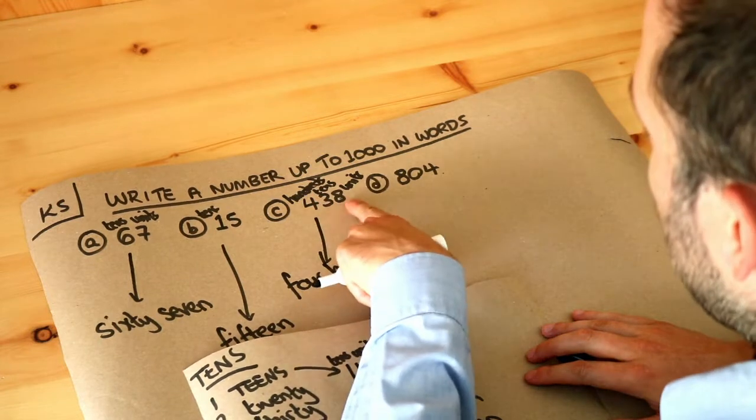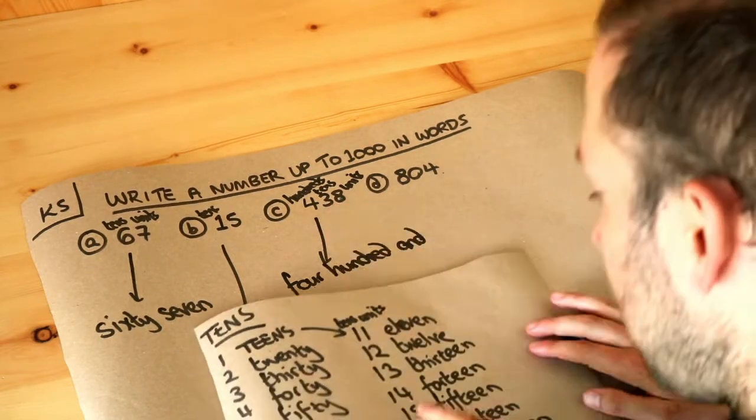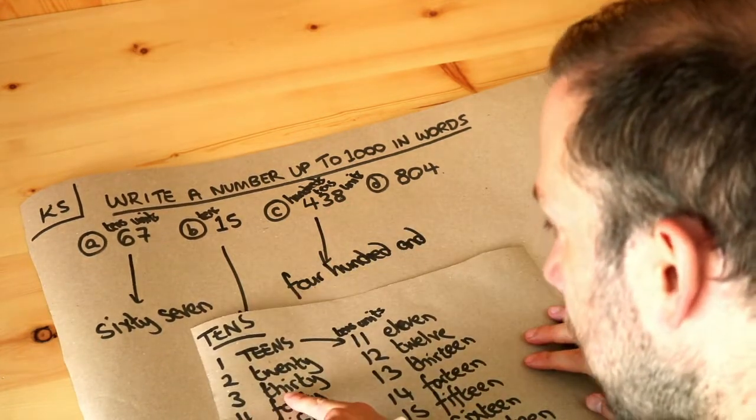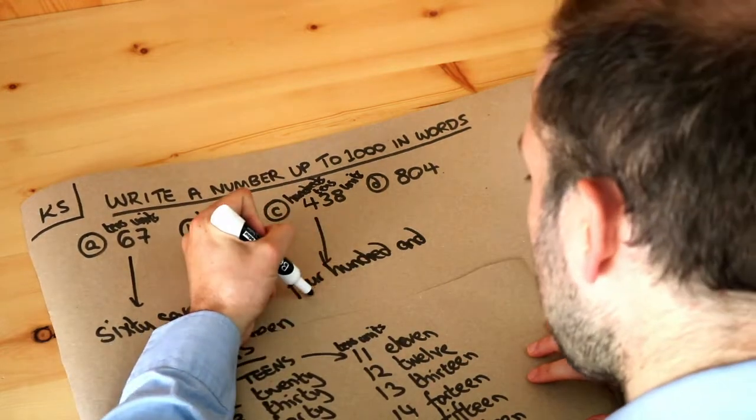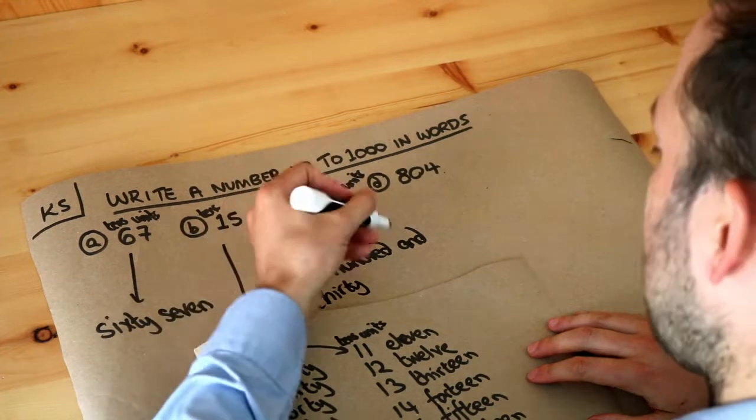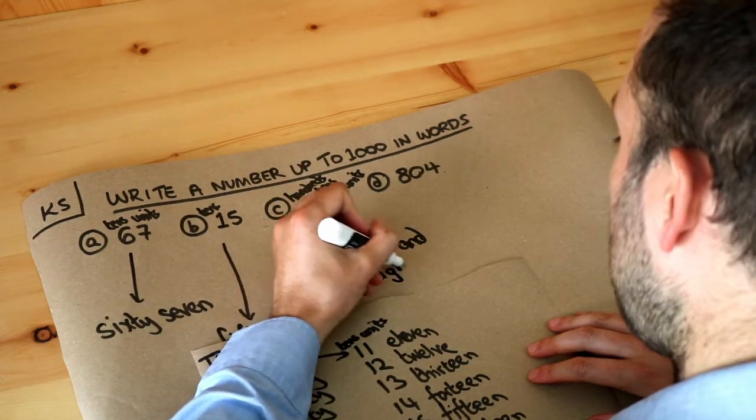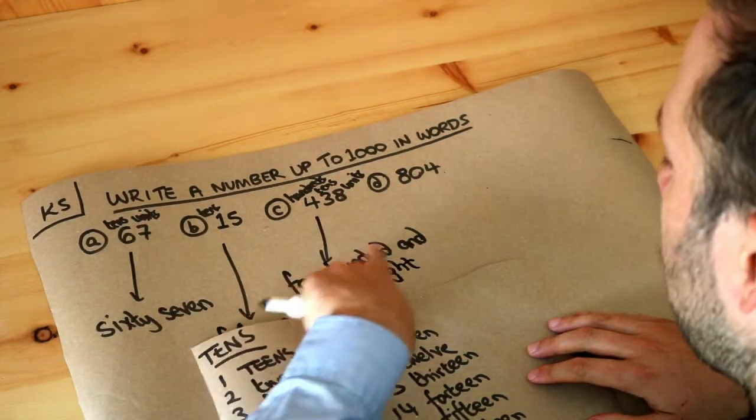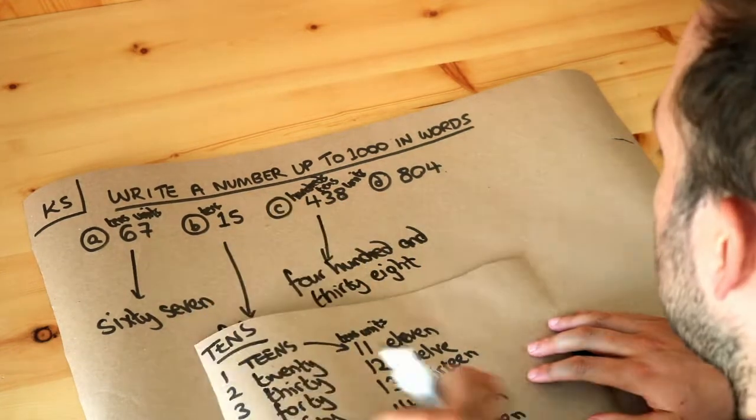And then we look at the rest of it. So we've got a tens digit of three. That's thirty. And then the units digit is eight, so we put the eight. So we'd say this number as four hundred and thirty-eight.